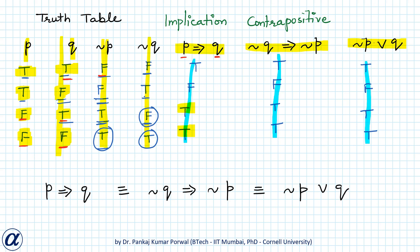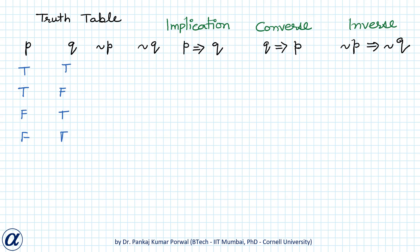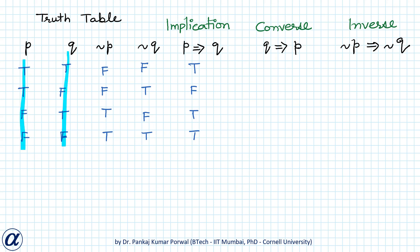Next, I will derive the truth table for the converse and inverse of the implication. For p implies q: true, false, true, true. For the converse q implies p: when q is true and p is true, it is true; when q is false and p is true, it is true because false can imply anything; when q is true and p is false, it is false; when q is false, it is true again.